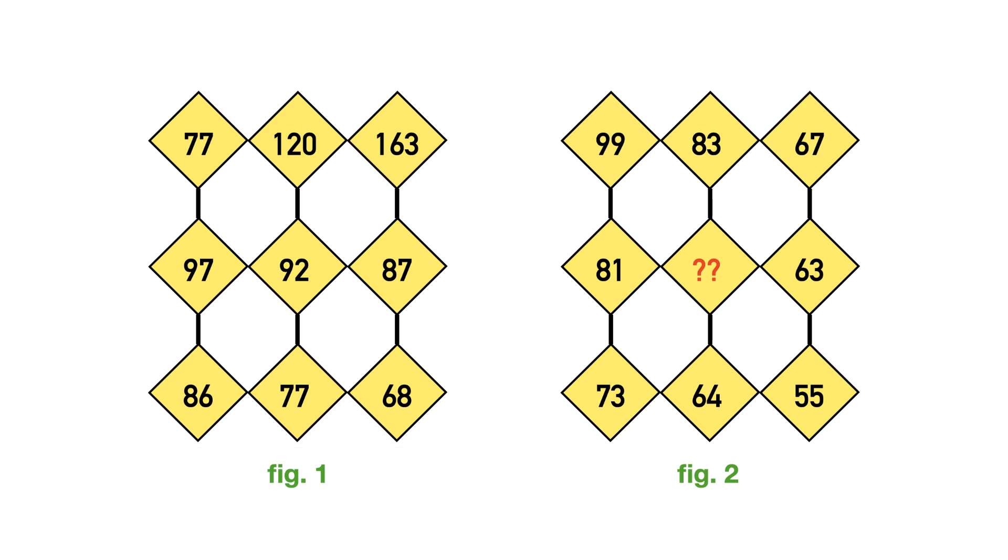Similarly in figure 2, numbers are following the same pattern as figure 1. Now consider the row with the missing number, that is the second row.